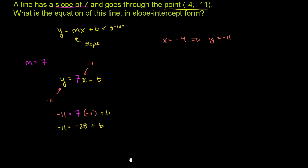And now we can add 28 to both sides of this equation. I'm just trying to isolate the b on the right-hand side. So on the left-hand side, negative 11 plus 28, that is just positive 17. These guys cancel out on purpose. So I get b equals 17.